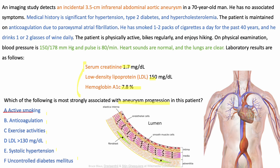Active smoking activates enzymes like elastase that break down the tunica media layer, making it weak and causing aneurysm progression. Although hypertension contributes through shear stress and can expand the aneurysm, smoking is more important because it directly breaks down the vessel wall. Diabetes is associated with atherosclerosis but not aneurysm progression. Similarly, high LDL is linked to atherosclerosis, not to aneurysm progression specifically.